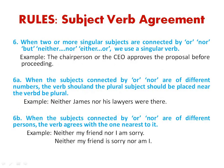Rule number 6: when two or more singular subjects are connected by 'or,' 'nor,' 'but,' 'neither...nor,' 'either...or,' etc., we use a singular verb. When two singular subjects are joined with either/or or neither/nor, we use a singular verb. For example, 'the chairperson or the CEO approves the proposal before proceeding.'